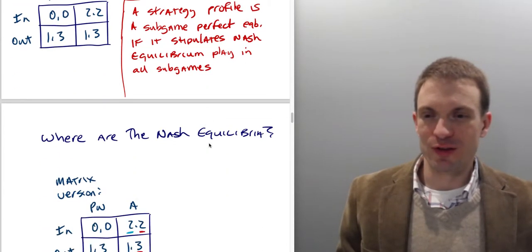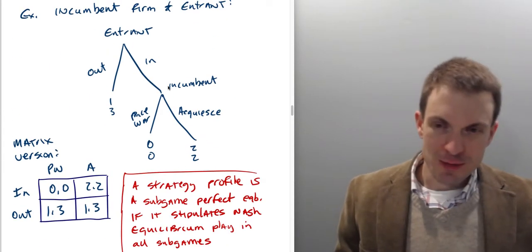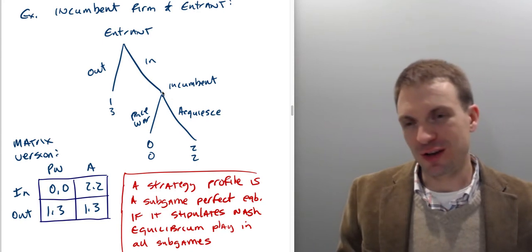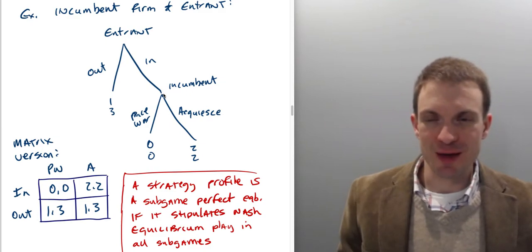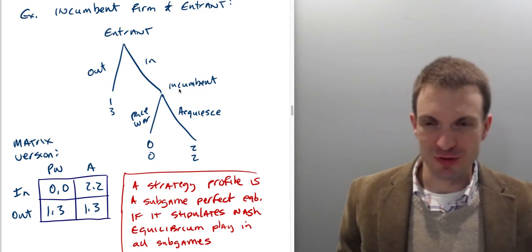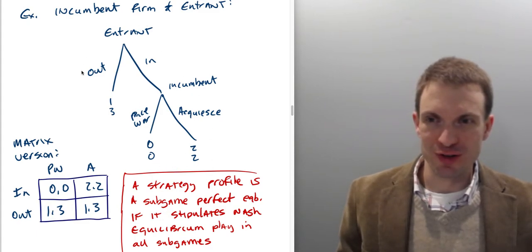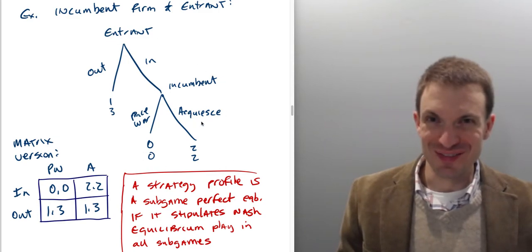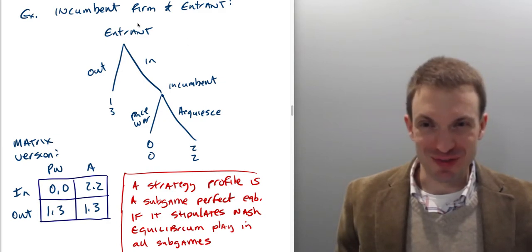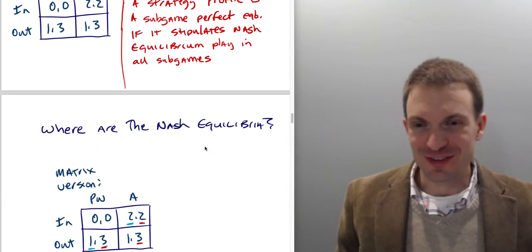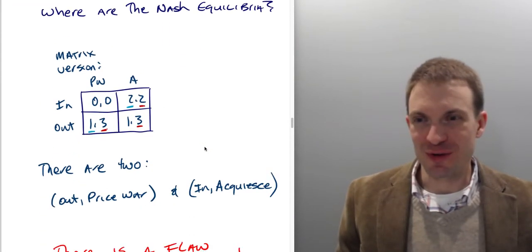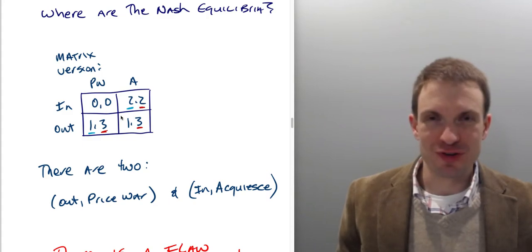First we have to define a sub-game. A sub-game begins with a single node and contains all subsequent nodes. You can't cross information sets. In this game we have two sub-games: the proper sub-game beginning at the incumbent's decision node, and trivially the entire game itself. On an exam, always circle the whole game because that's one you get for free.